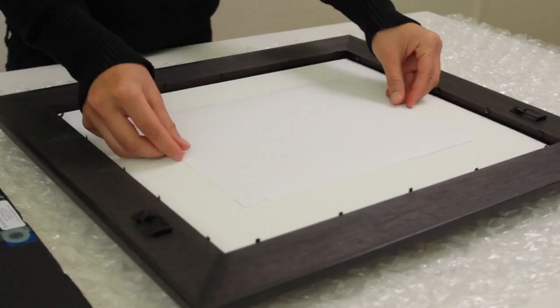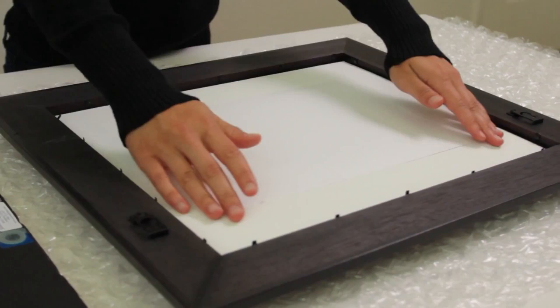Next, align your diploma over the matte board opening, making sure that its edges are parallel and evenly spaced with the sides of the opening.